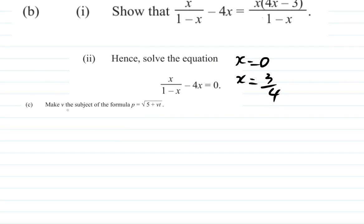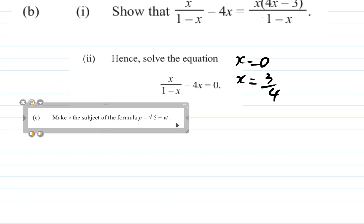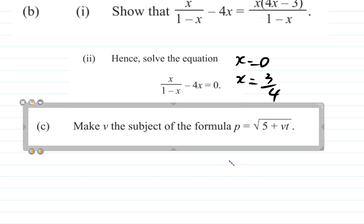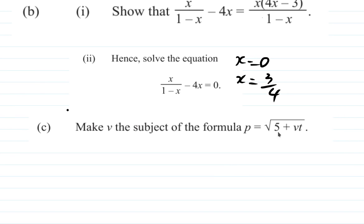Part D says: make V the subject of the formula. P equals the square root of S plus VT. I want you to pause the video and do that. Alright, you've done it — what did you get?